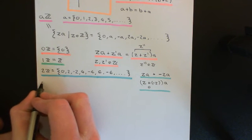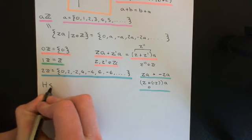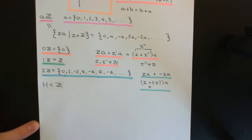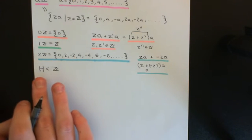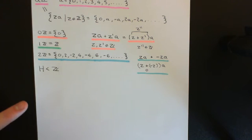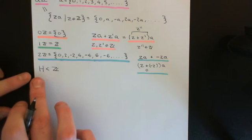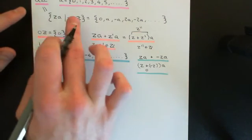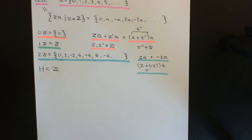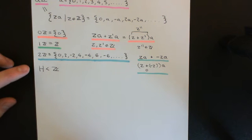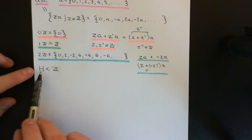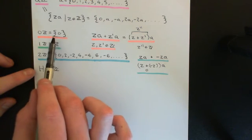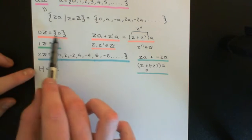So let's suppose that I have some capital H, which is a subgroup of the group of integers under addition. What I want to prove is that this capital H is one of the ones I've already shown. So there are two options: either capital H is just the trivial subgroup that contains only zero — in which case it is one of these, it's 0Z — or capital H has to contain at least some positive integers.